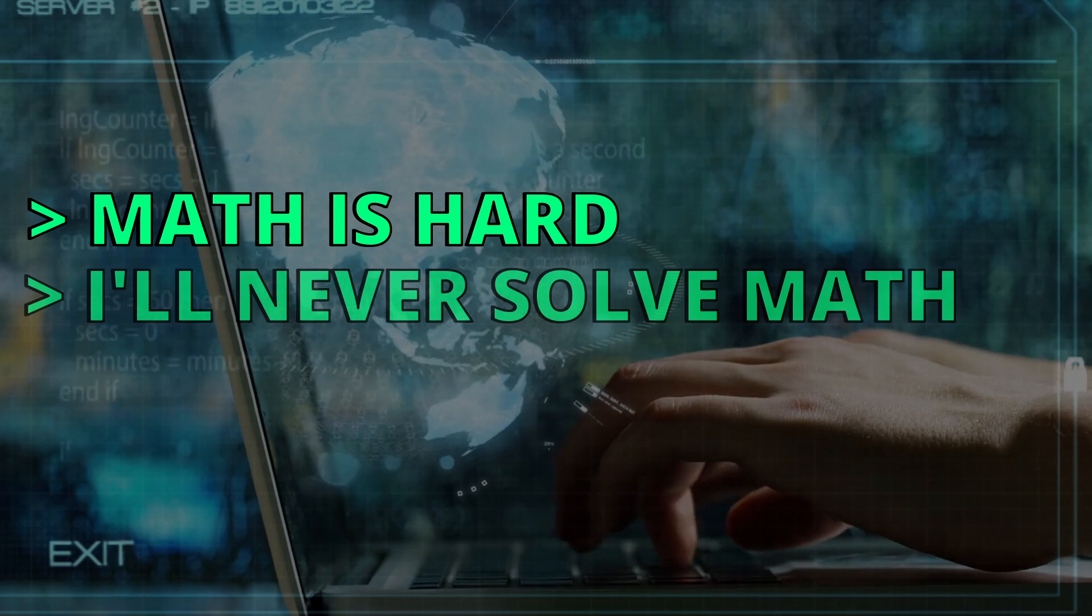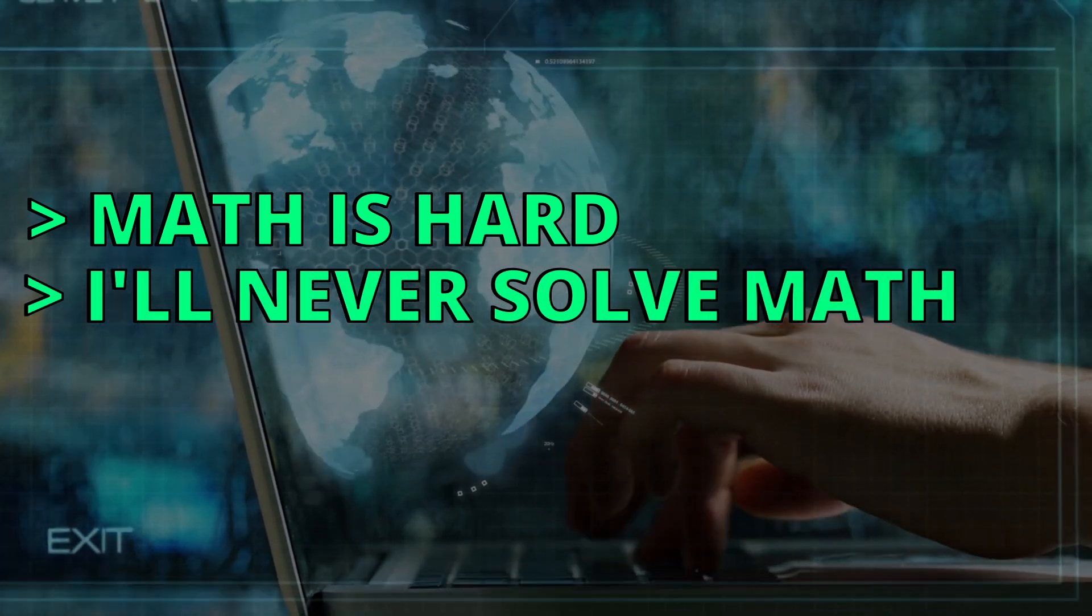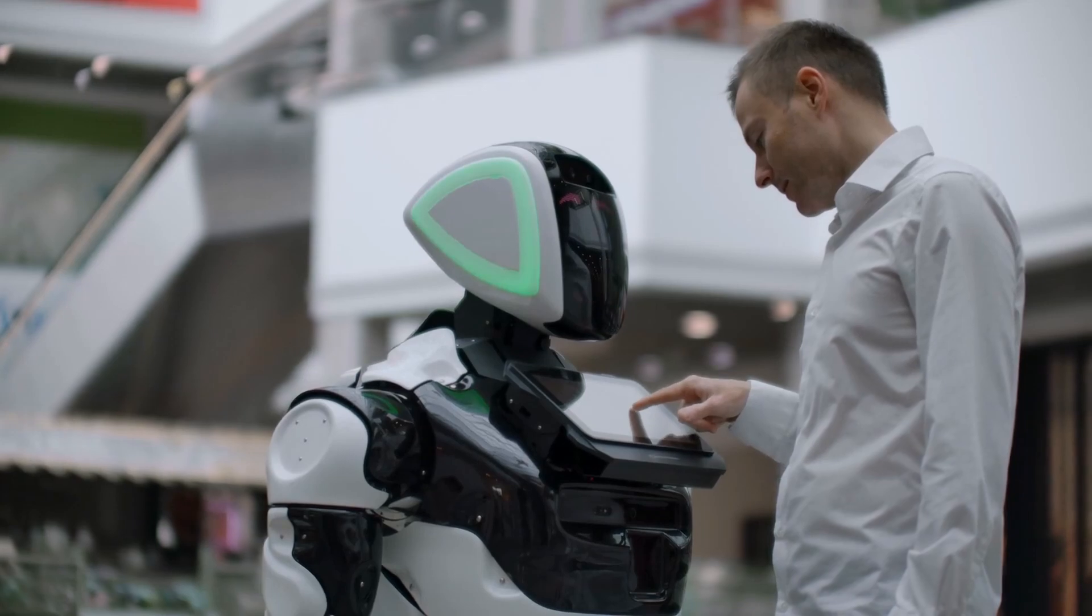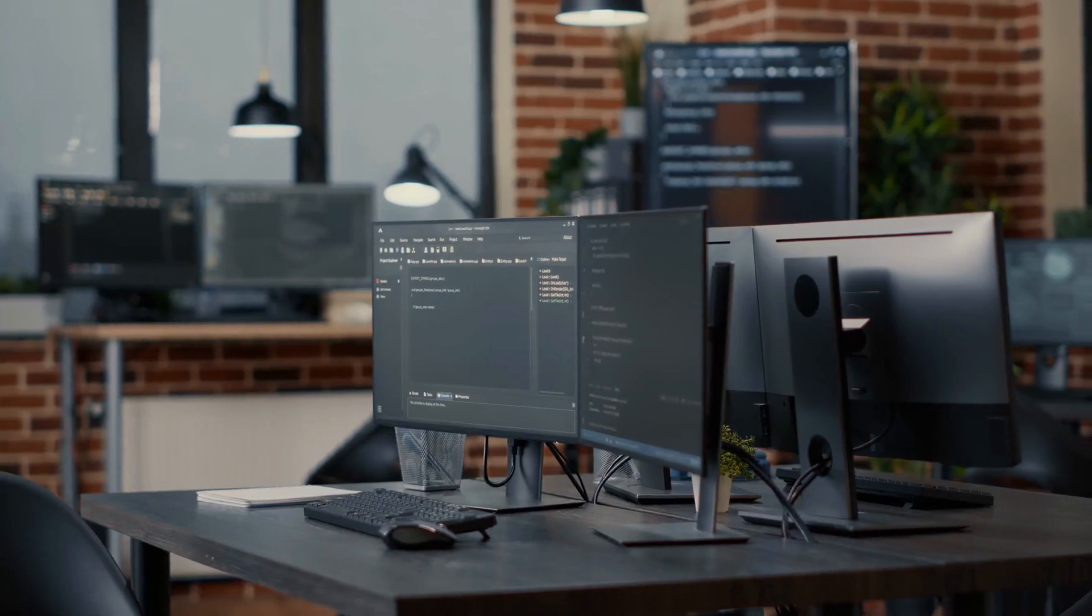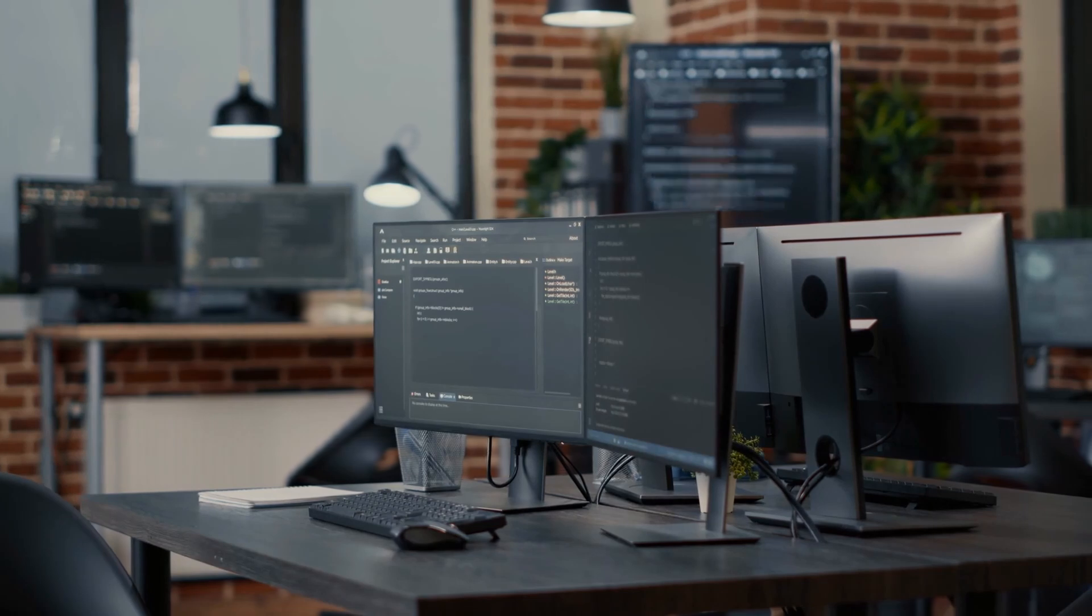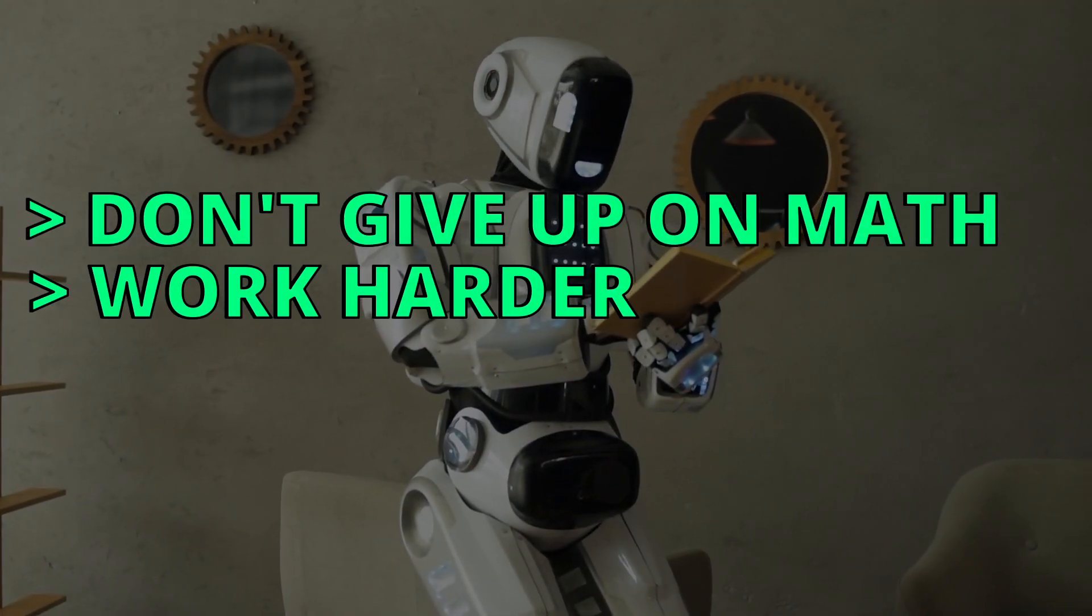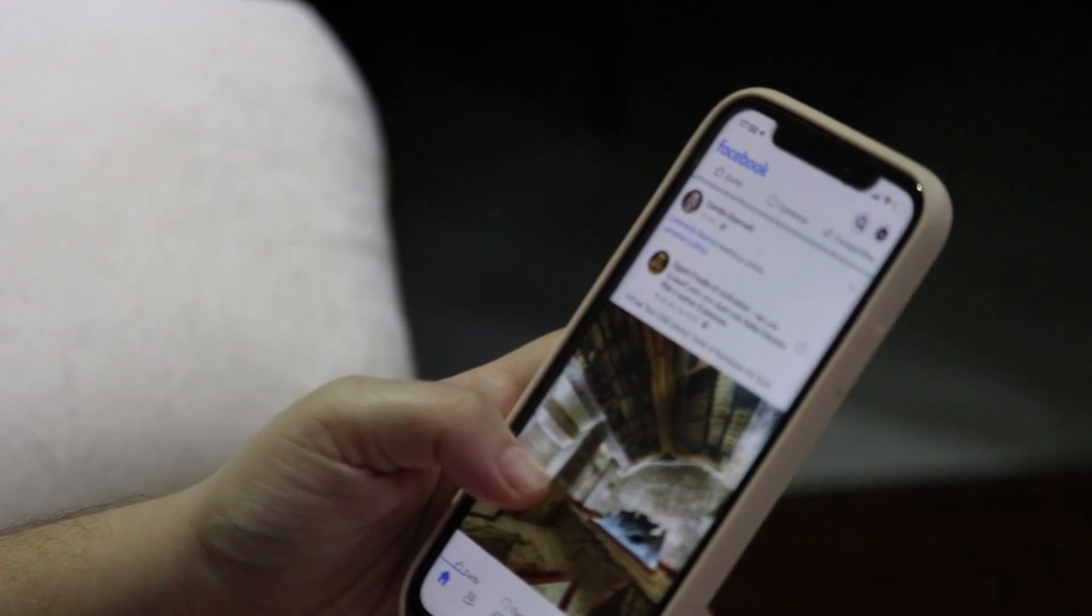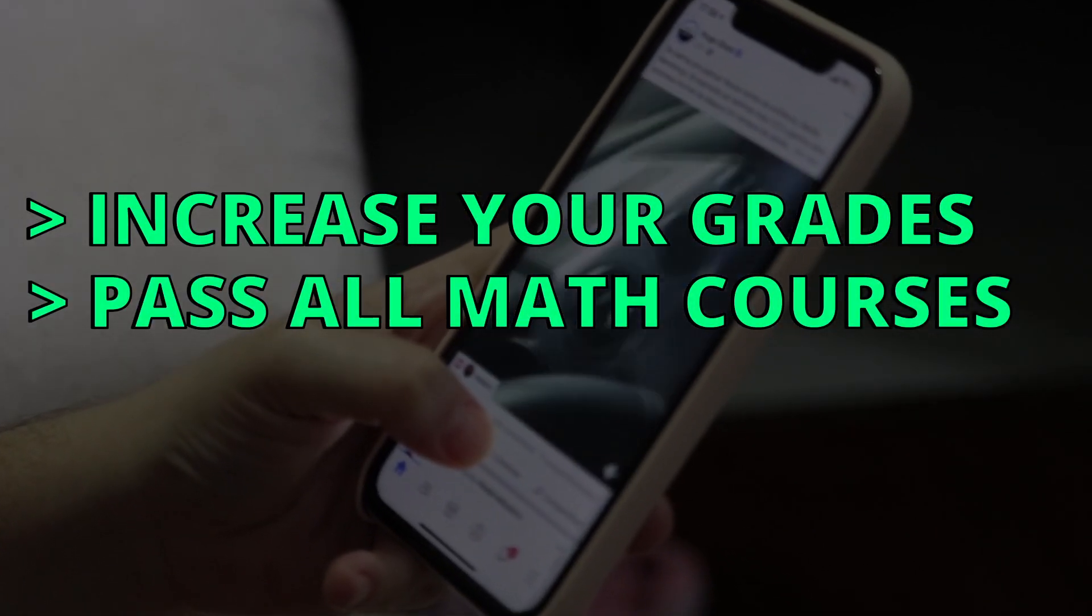If you keep telling yourself math is hard and that you will never be able to solve math problems, you'll eventually start doubting your computer science journey. So it started with a small problem of you being annoyed with math to a bigger problem of you being totally annoyed in pursuing computer science. Instead of giving up on math, try working hard to be able to get better. Doing that will help you increase your grades in math and pass all math courses and continue your computer science journey.